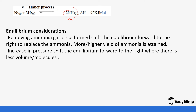Increasing the pressure shifts the equilibrium forward to the right, towards the side with less volume and fewer molecules. Looking at the number of molecules: in the reactants there are four molecules, and in the products there are two molecules. So the reactants have more molecules and the products have fewer. Increasing pressure therefore shifts the equilibrium to the right, producing more of the side with fewer molecules.